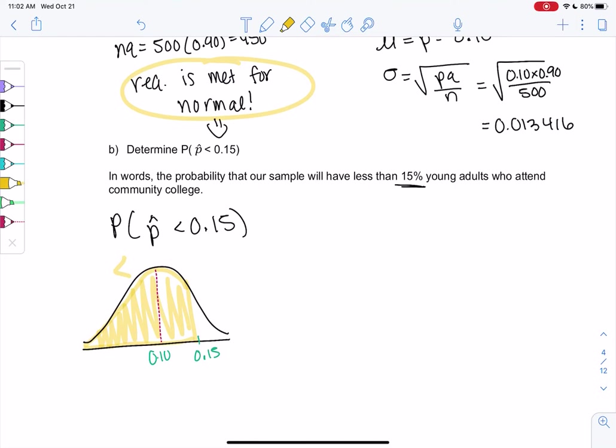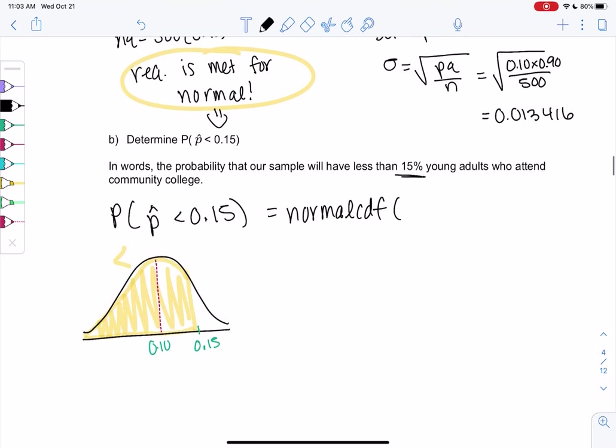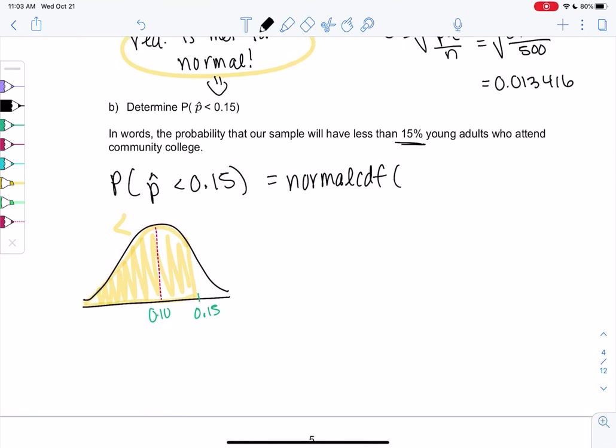So we learned we can use normal CDF to solve this, but we need z-scores before we can use normal CDF. So I need to find a z-score for 0.15. 0.15 minus the average of 0.10 all over 0.013416, my standard deviation. And I get a z-score of 3.727. This is different than last section because we have a different sample size. So that changed the standard deviation.